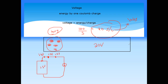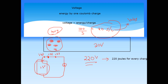As you have seen, on the mains supply it is written 220 volts. This means that if there is one coulomb of charge, it will carry 220 joules. That is why when you are holding a 1.5V cell in your hand, you do not feel any electric shock — because it is only 1.5 joules per charge, and that is not enough energy for your body to feel.